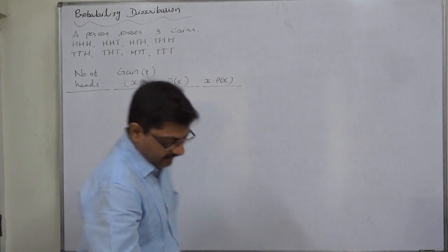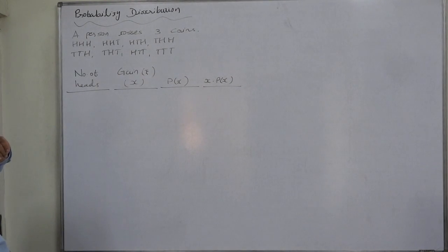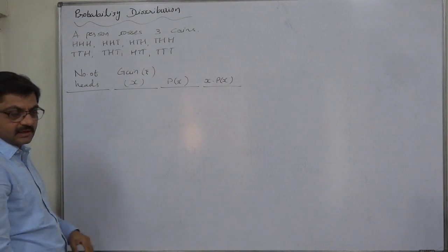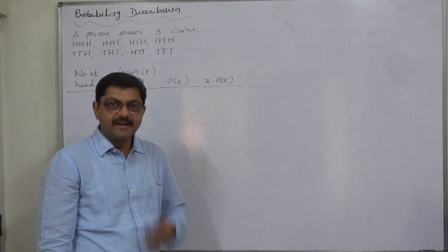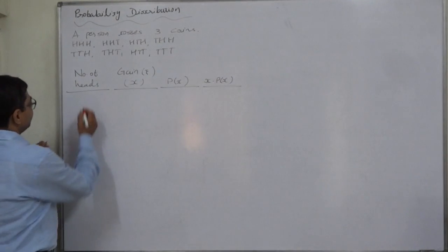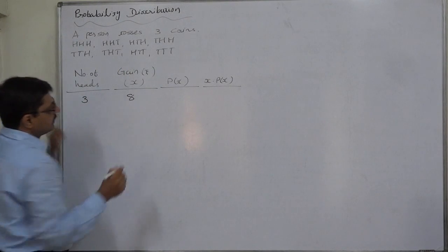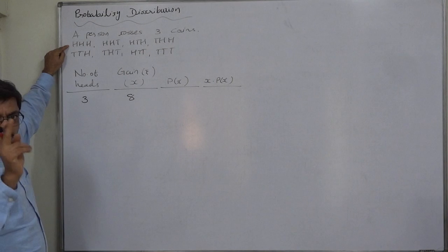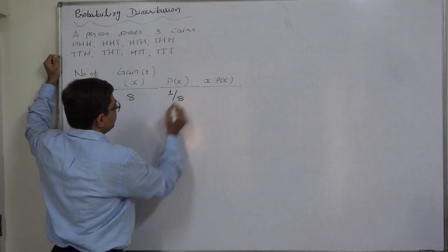What exactly can happen? The number of heads and his gain will be dependent on the number of heads. Starting with three heads — his gain is eight rupees. The favorable case for three heads is only one, so the probability is one by eight.